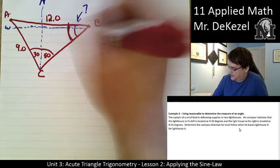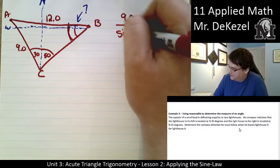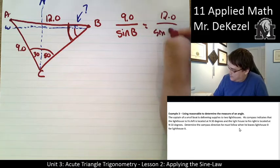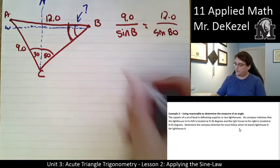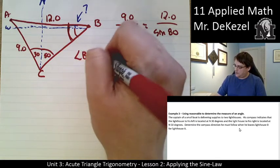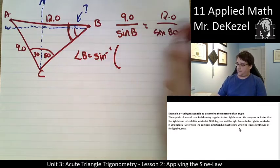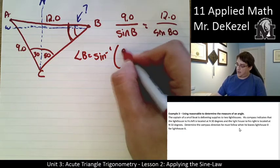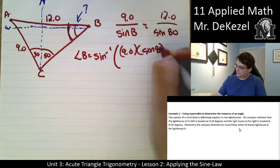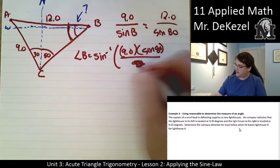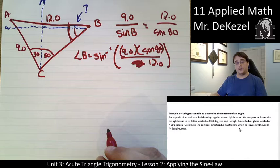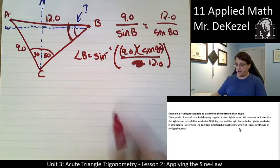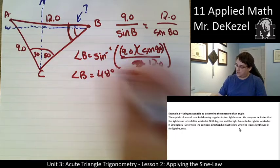So it is going to be side B. So 9.0 divided by the sine of B is equal to this side, 12.0, divided by this angle, which is the sine of the whole thing, which is 80. I'm going to rearrange. So angle B equal to the inverse sine of 9.0 times the sine of 80 divided by 12. So we go sine of 80 times 9 divided by 12 equals, and sine inverse that number, angle B is equal to 48 degrees.